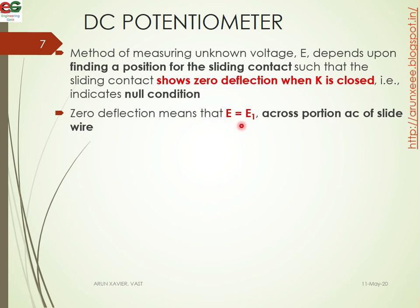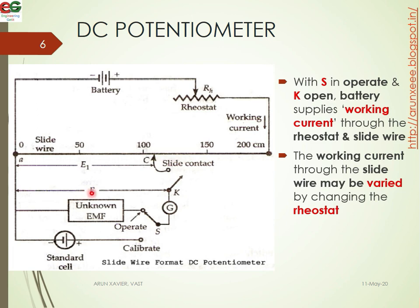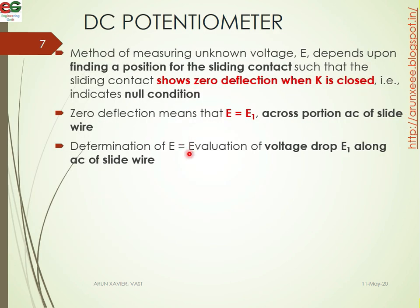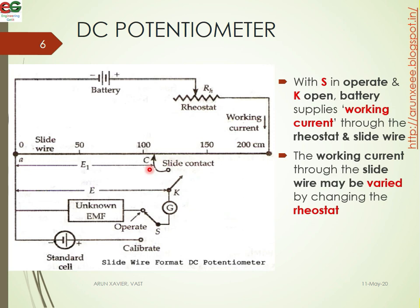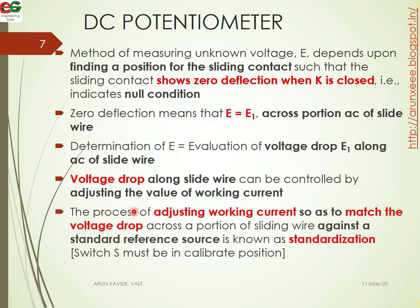At null deflection, the unknown voltage E equals the known voltage E1. That means the position of the sliding contact on the slide wire gives us E equal to E1. For determination of E, we evaluate the voltage drop E1 along the sliding wire at the null deflection point. Because when switch K1 is closed and there is null deflection, the voltage drop along the slide wire can be controlled by adjusting the value of the working current.